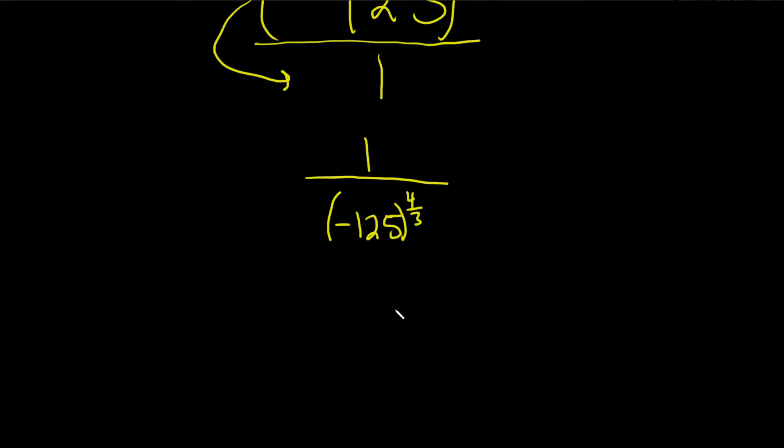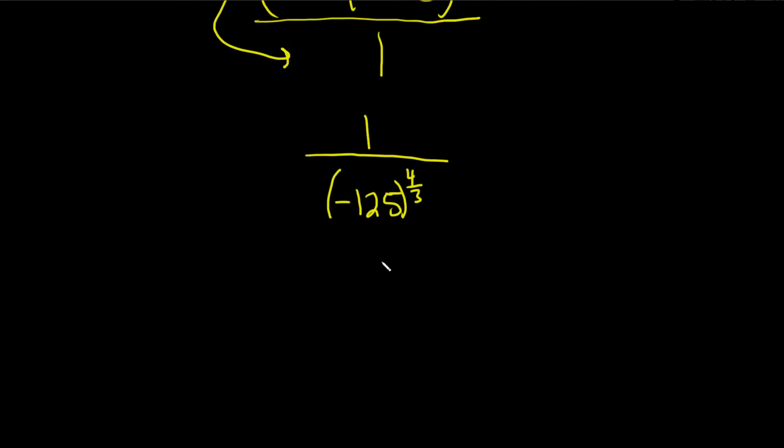Now we need to get rid of this four-thirds. So here's the trick. The one stays up top. This number here goes in the little pocket, so it's like this. That's the little pocket. It always goes there. It's called the index. And the negative 125 stays here, and then this is to the fourth power.